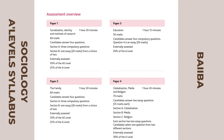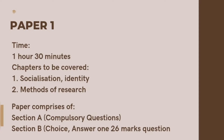Previously we had only three papers, but now they've divided sociology into the AS and A-level syllabus. Paper one and paper two will count as your AS syllabus, and paper three and paper four will count as your A-level syllabus.